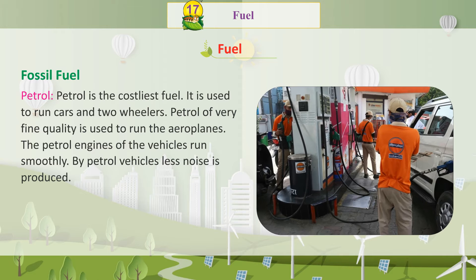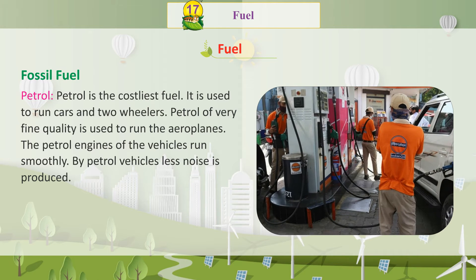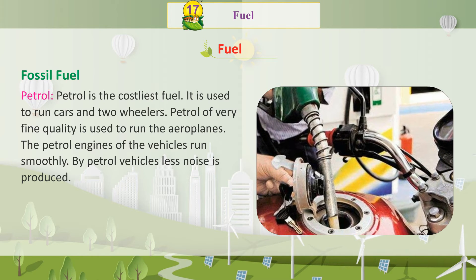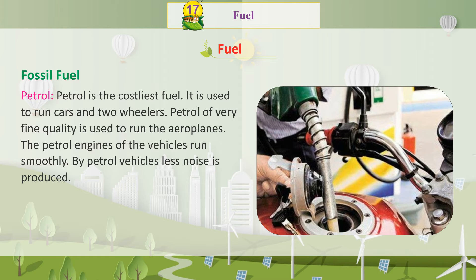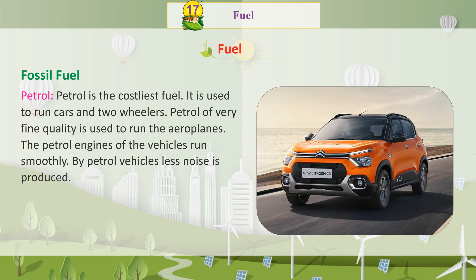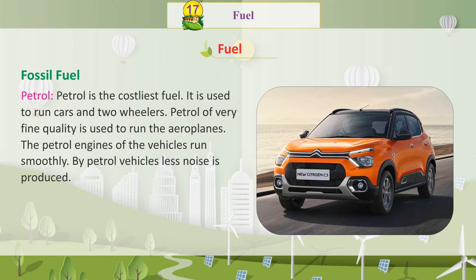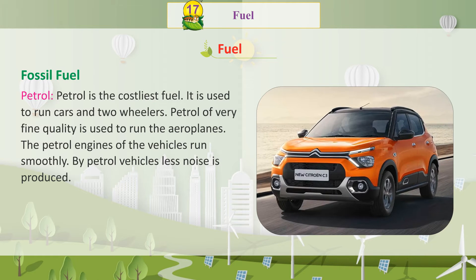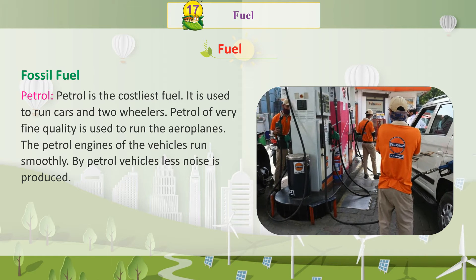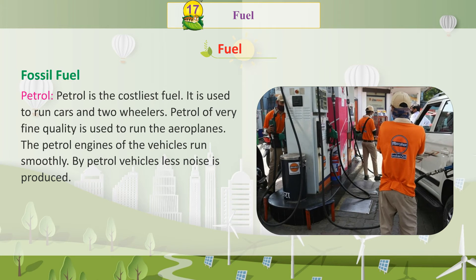Petrol is the costliest fuel. It is used to run cars and two-wheelers. Petrol of very fine quality is used to run aeroplanes. The petrol engines of vehicles run smoothly, and by petrol vehicles less noise is produced.